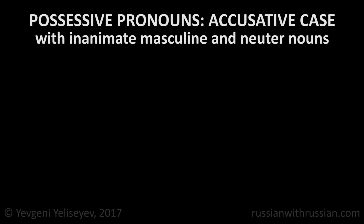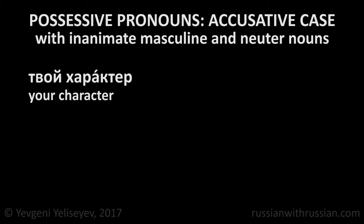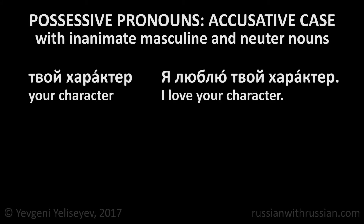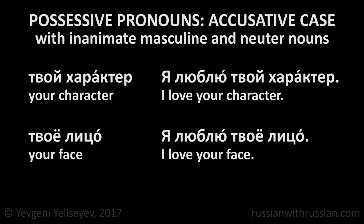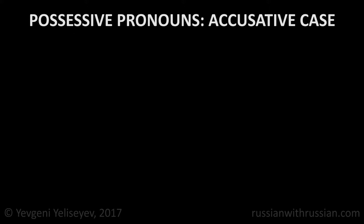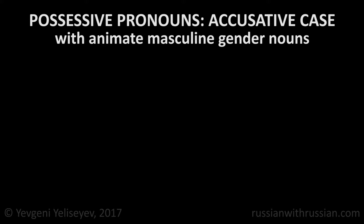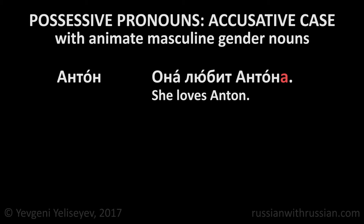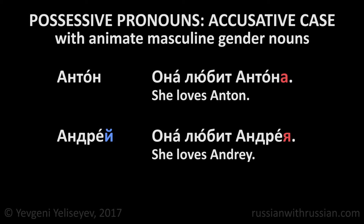Inanimate nouns of the masculine and neuter gender don't change their forms in the accusative case. Твой характер – your character. Я люблю твой характер – I love your character. Твоё лицо – your face. Я люблю твоё лицо – I love your face. But animate nouns of masculine gender describing people or animals change their forms. As we saw in the last lesson, they add the ending А or Я: Антон → она любит Антона, Андрей → она любит Андрея.